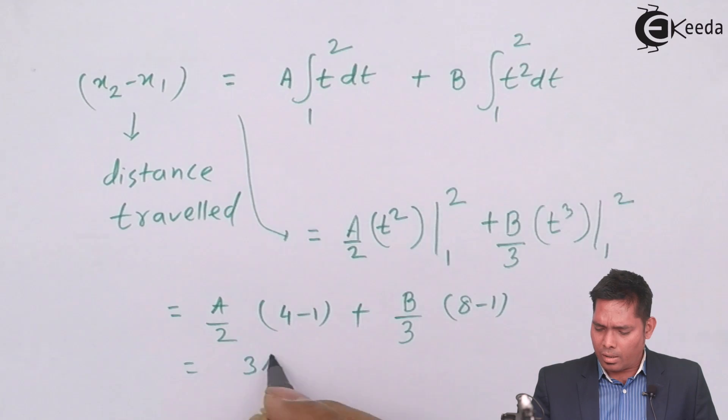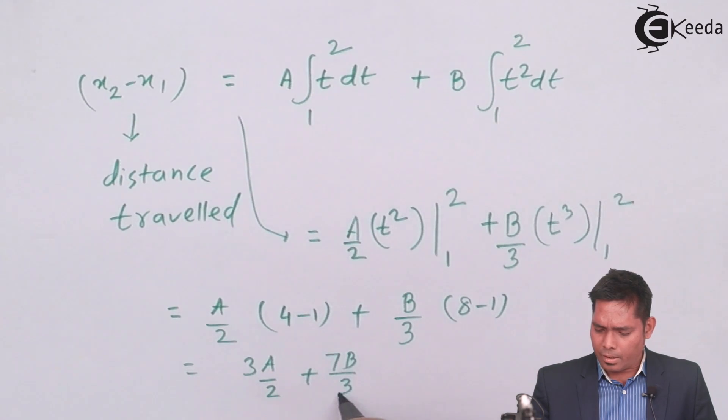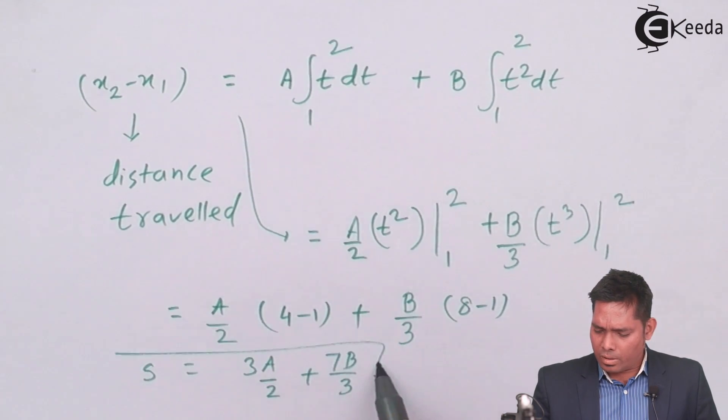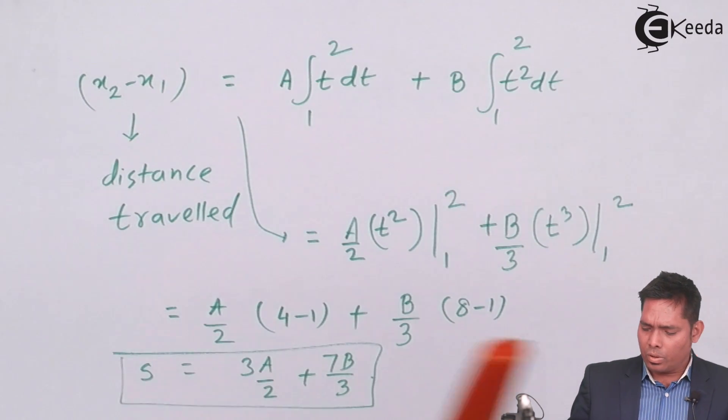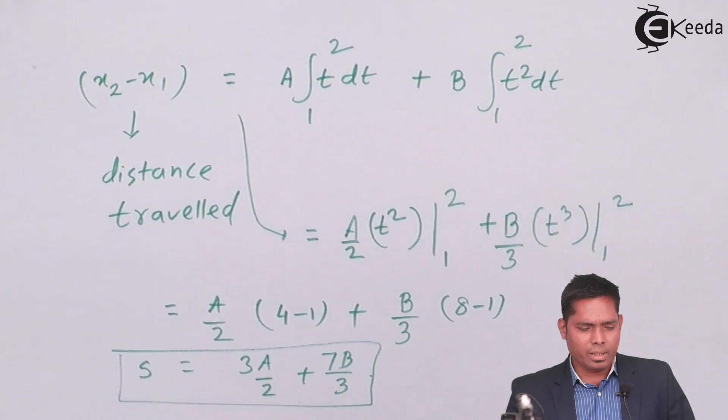So, this is 3A by 2 plus 7B by 3, so this is the distance traveled, suppose that is s, so the distance traveled during 1 to 3, about 2 seconds is this.